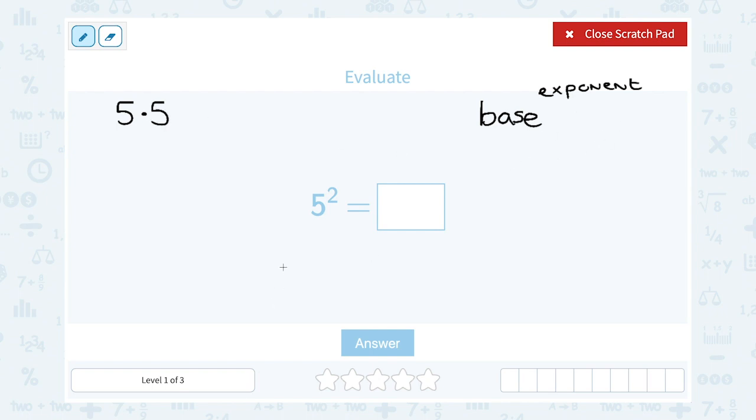So take a look at that. The base is what I'm multiplying out, five, and the exponent is how many times, right? I'm writing it out twice. And then it just becomes a multiplication problem. Five times five is twenty-five. So five squared equals twenty-five.